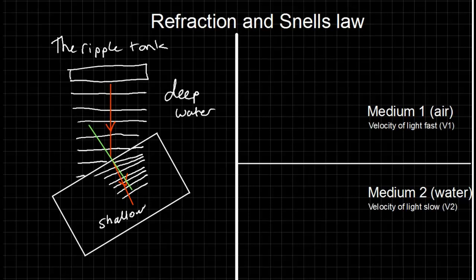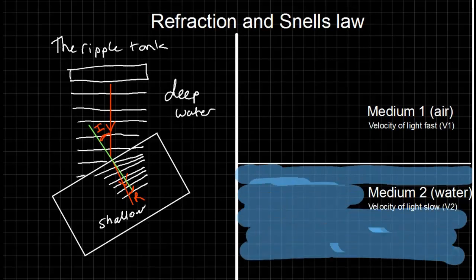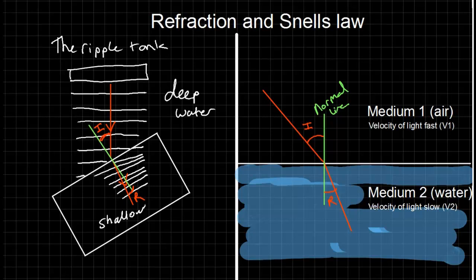It has been found that the same thing is true for light. For instance, if light goes from air to water, you can measure the speed of light in air and in water, and you find that you also get a change in direction. Both of these circumstances follow the law called Snell's Law, which is that the sine of the angle of incidence divided by the sine of the angle of refraction equals the refractive index, or it's also equal to the velocity in medium 1 divided by the velocity in medium 2.